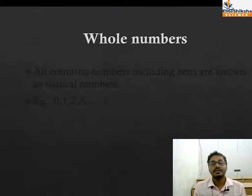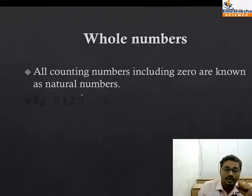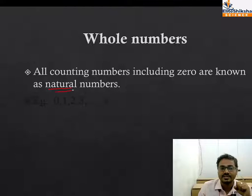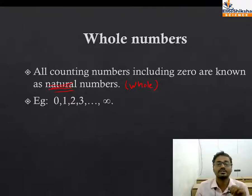Next is whole numbers. What are whole numbers? All counting numbers including zero are known as whole numbers. When zero is added to natural numbers, it becomes whole numbers. All counting numbers including zero are known as whole numbers. We are talking about positive numbers: zero, one, two, three, and so on.